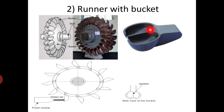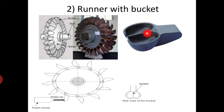The advantage of having two spoon shapes lies in the fact that the axial forces — forces perpendicular to the direction of motion — neutralize each other, being equal and opposite. Hence the bearings supporting the wheel shaft are not subjected to any axial thrust.